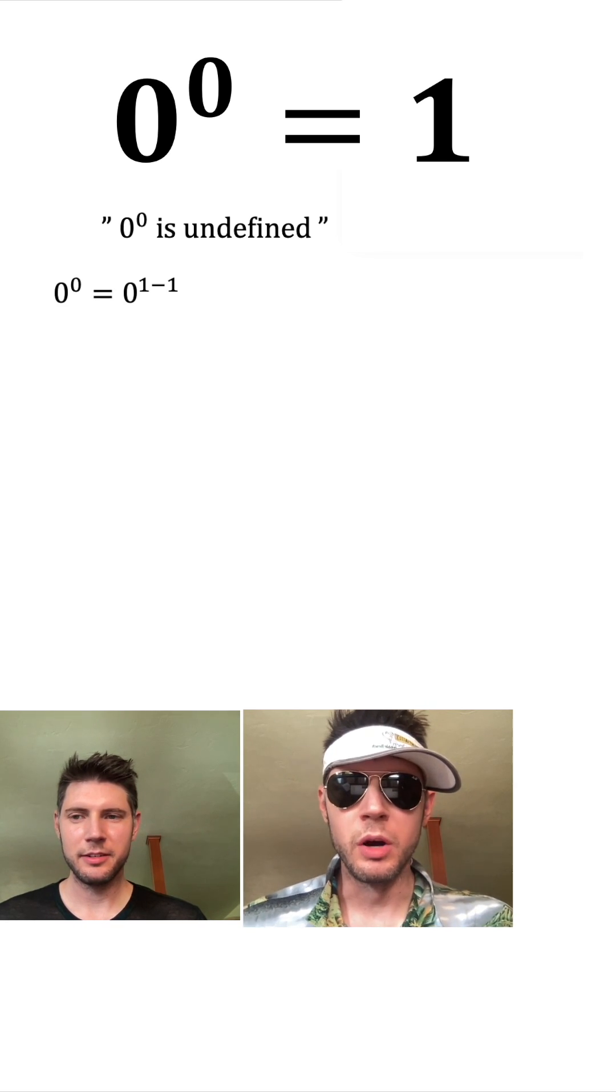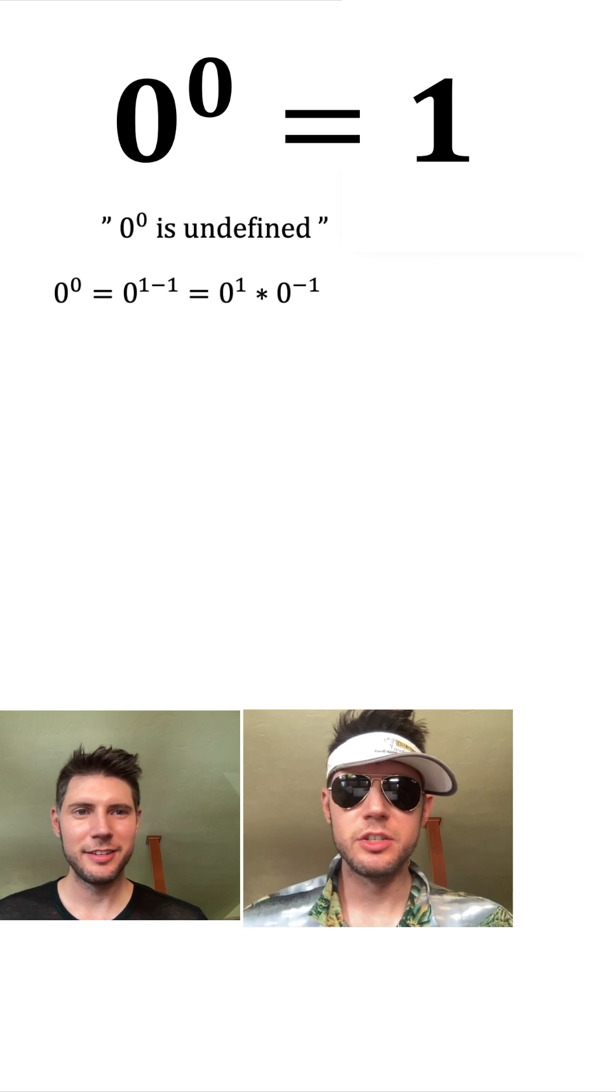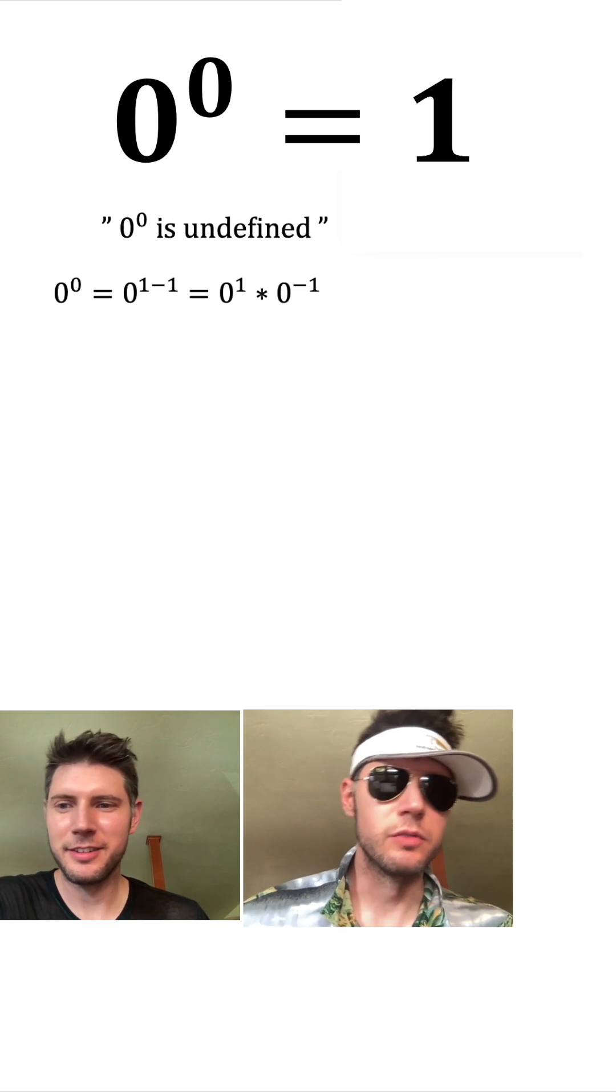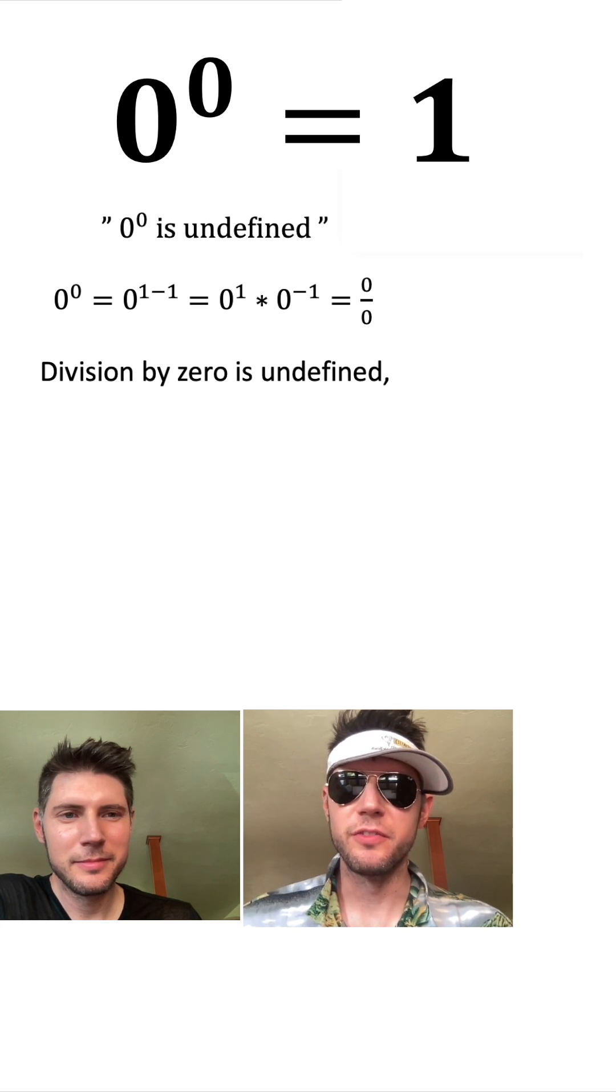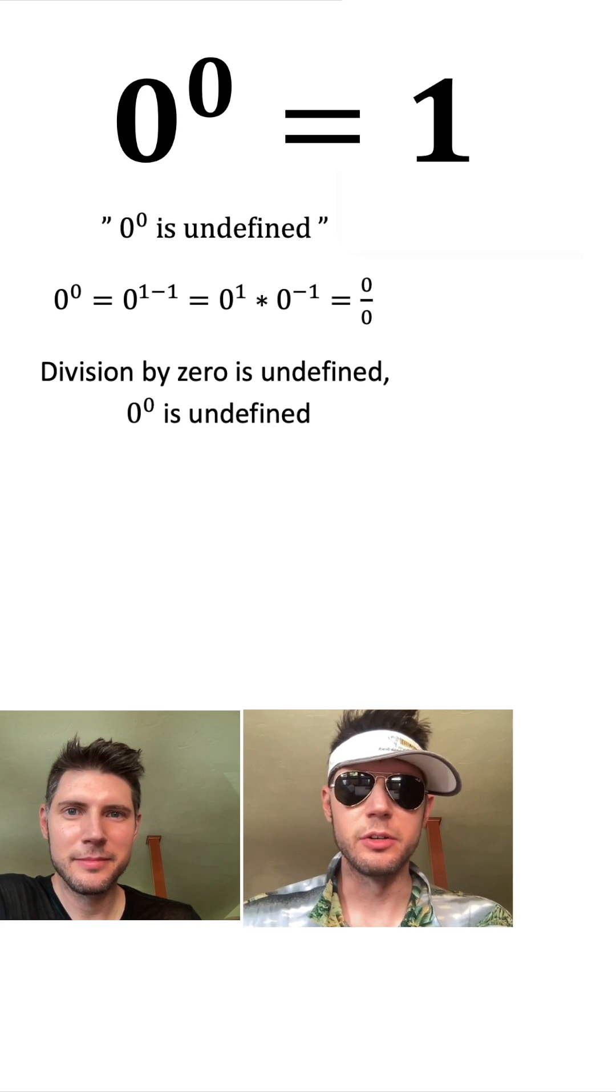to 0^(1-1), which is equal to 0^1 times 0^(-1), which is equal to 0/0. Division by zero is undefined, therefore 0^0 is undefined.